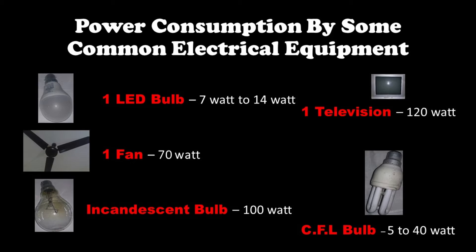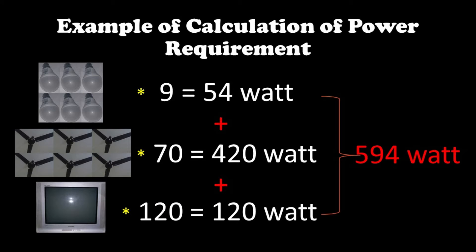In my case, I want to run six LED bulbs, six fans, and one television. One LED bulb consumes 9 watts of power, so six LED bulbs consume 54 watts. One fan consumes 70 watts of power, so six fans consume 420 watts. One television consumes 120 watts of power. So my total power requirement is 594 watts: 54 watts (LED bulbs) plus 420 watts (fans) plus 120 watts (television).